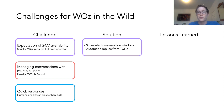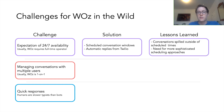For the first challenge, we tried scheduling one-hour windows with users for daily conversations at the outset, and had Twilio send automatic replies when the wizard was not available. In practice, we found that conversations usually spilled outside of the scheduled times, and so there's a need for more sophisticated scheduling approaches.